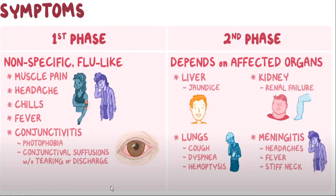There are two phases of symptoms. In the first phase, there are non-specific flu-like symptoms including muscle pain, headache, chills, fever, and conjunctivitis of the eyes. In the second phase, symptoms depend upon the affected organs: liver involvement causes jaundice; kidney involvement causes renal failure; lung involvement causes cough, deafness, and hemoptysis; and meningitis causes headache, fever, and stiff neck.